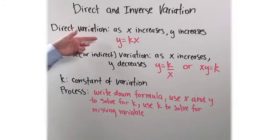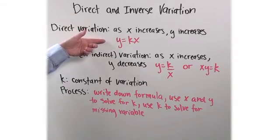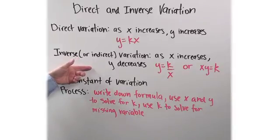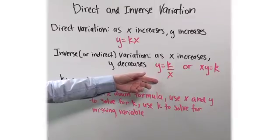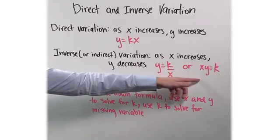For a direct variation, your formula is y equals kx. For inverse or indirect variation, your formula is y equals k over x, or xy equals k.